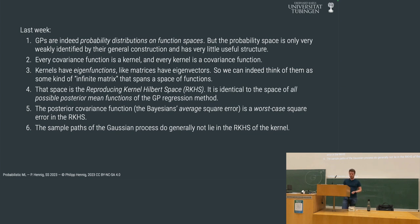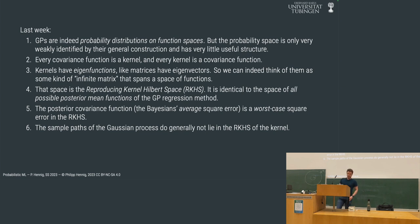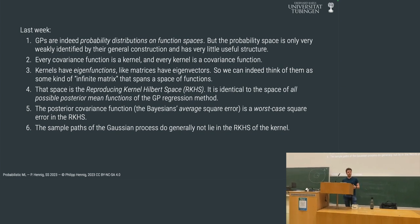This function space is called the reproducing kernel Hilbert space, which you're going to hear a lot about in statistical machine learning. The relationship of that space to the Gaussian process is that it's essentially the space of all possible posterior mean functions of a given Gaussian process. We've also seen how the two frameworks relate — the posterior covariance function is related to a worst-case error bound in the frequentist framework, which Bayesians treat as their average squared error. In a sense, we're a bit more conservative.